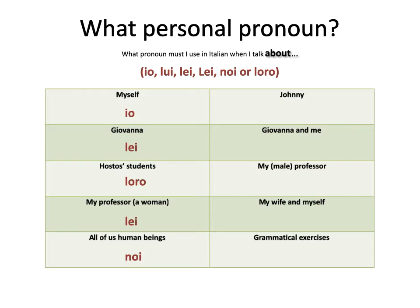What if I want to talk about humanity in general, about all of us human beings? In English I would use 'we,' so in Italian I use noi. And if I want to talk about Johnny — Johnny is clearly a guy, so I would use 'he' in English, I use lui in Italian. Now I'm talking about a group of people that includes myself — Giovanna and me. What would I say in English? We. So in Italian I say noi. And if I want to talk about my professor, but this time he is a guy — I don't use lei, I use lui.